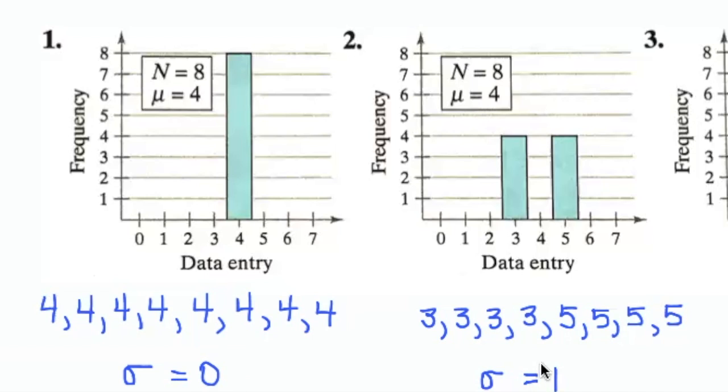So our best guess is that this data set would have a standard deviation of 1. Notice it's a little bit higher than 0 because the data has started to spread out from the mean, but they're still relatively close.